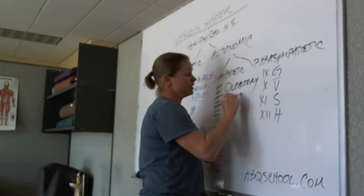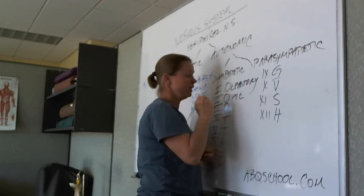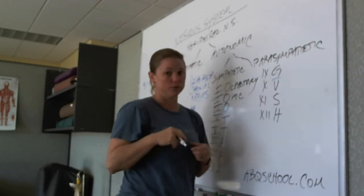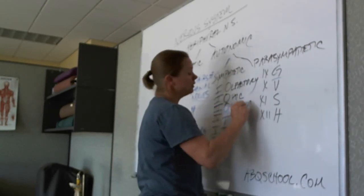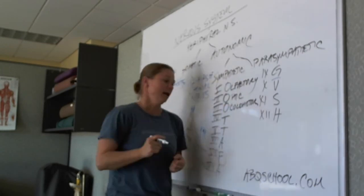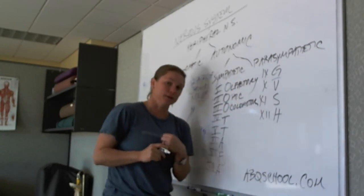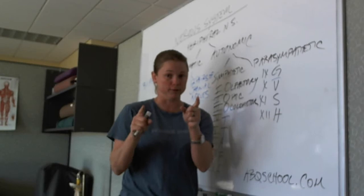Alright, our second cranial nerve is the optic nerve, and there's a T, and optic is eyes, or eyesight, right? Oculomotor is cranial nerve three, and oculo is eye, and it's eye movement, right?